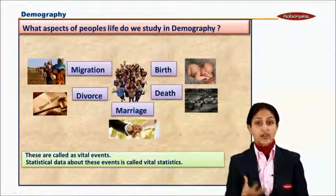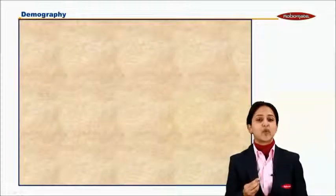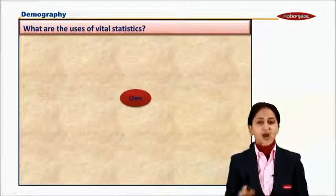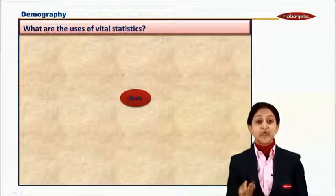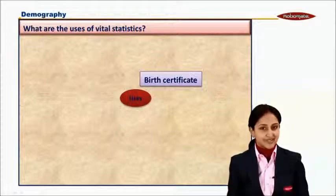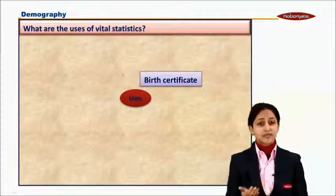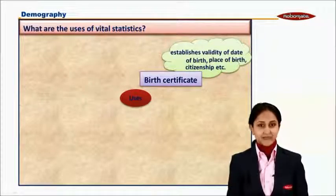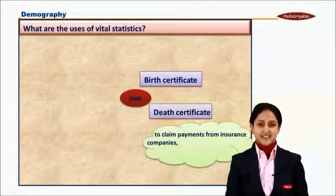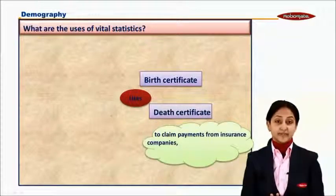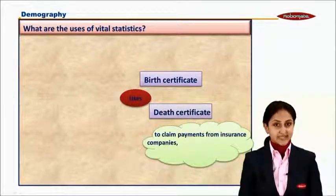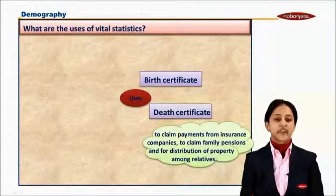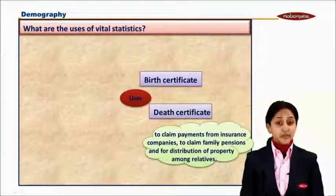Now, once we know what vital events and vital statistics are, let's look at their uses. The very first vital event was birth. We record birth with a very important document called the birth certificate, which tells us the date of birth, the place of birth, and the citizenship of the person born. Similarly, death is recorded with the help of a death certificate. This certificate has a lot of legal importance — it helps you claim payments from insurance companies, claim pension benefits, and is important for distribution of property among relatives once a person dies.